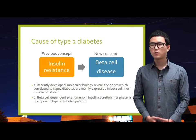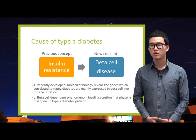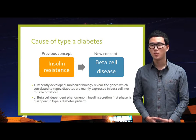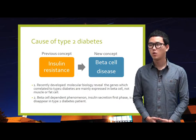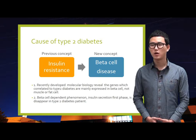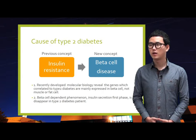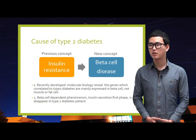Among these four classes of diabetes, in this presentation we will focus on Type 2 diabetes, which is the most common form. For decades, people believed the cause of Type 2 diabetes is insulin resistance, mainly caused by obesity. But recently, reported experimental results suggest that Type 2 diabetes is actually a beta cell disease.